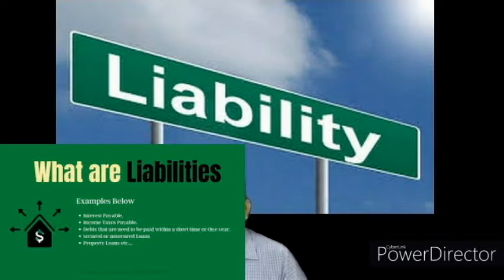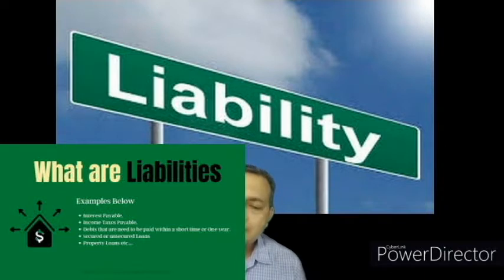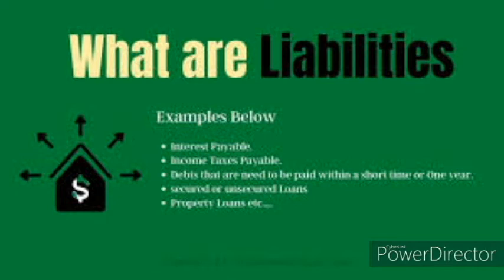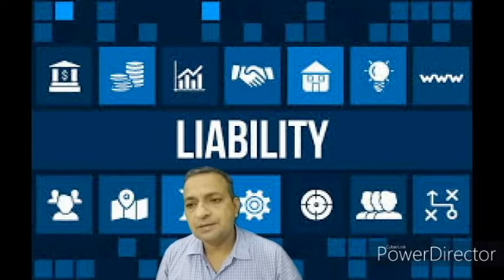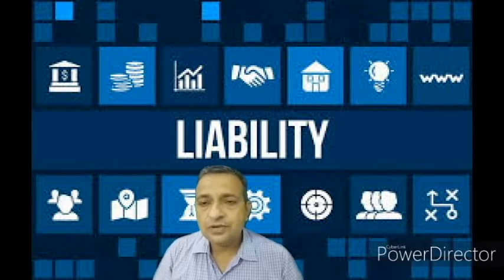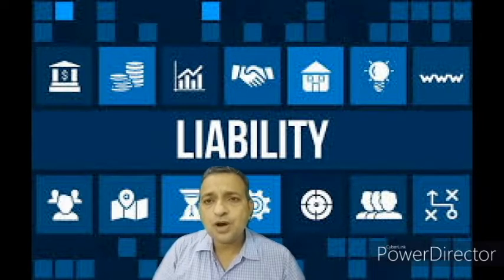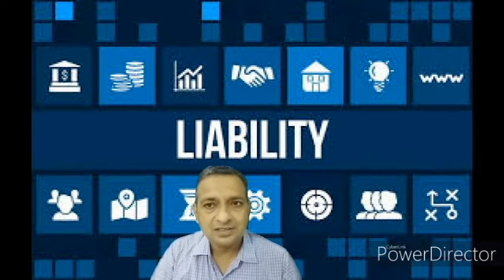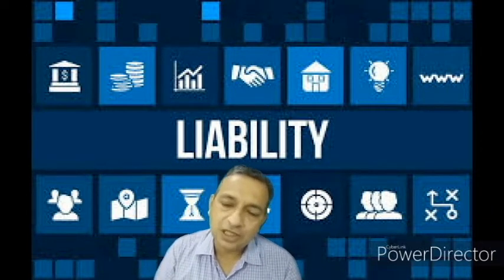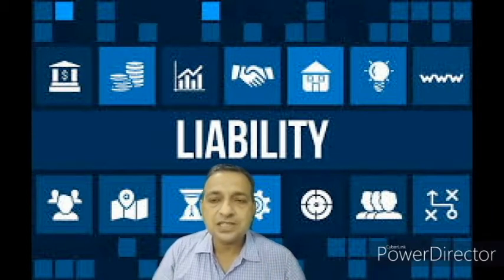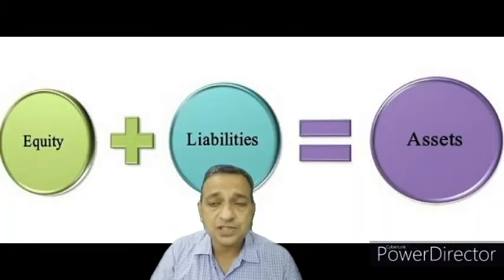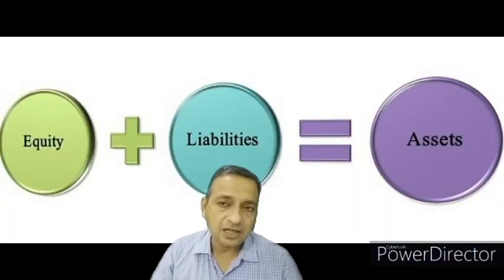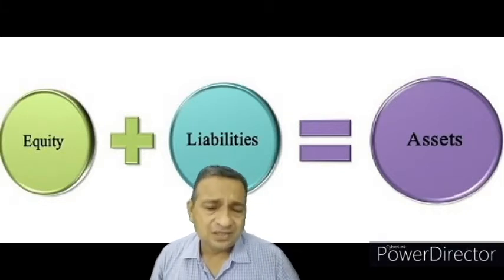Liabilities are the claims of creditors against the business enterprise — all claims of creditors that arise from past activities. It should be kept in mind: in business, liability is actually the combination of almost all assets except capital. If we want to calculate liabilities using an equation, we deduct capital from total assets.